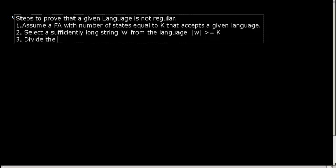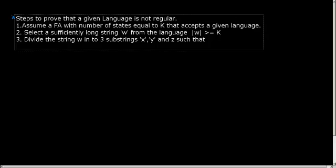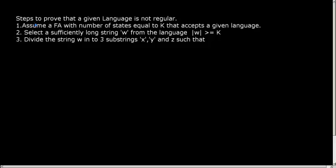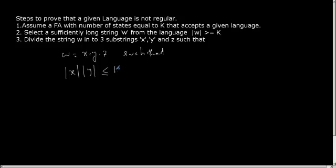Then divide the string W into three substrings X, Y, and Z such that W = XYZ. The constraint is that the number of symbols in X and Y together should be less than or equal to the number of states K, and the number of symbols in Y should be at least one — meaning Y must consume at least one symbol. These are the two constraints on the basis of which we decompose the string W into X, Y, and Z.